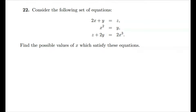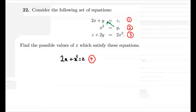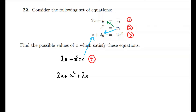Now for our next question. Consider the following set of equations: 2x + y = z, x² = y, z + 2y = 2x³. Find the possible values of x. We label these equations 1, 2, and 3. Substituting y from equation 2 into equation 1 gives us 2x + x² = z, which we label equation 4. Substituting equations 4 and 2 into equation 3 gives us 2x + x² + 2x² = 2x³, which we call equation 5.